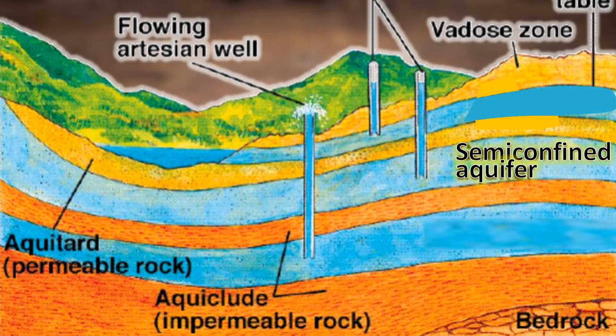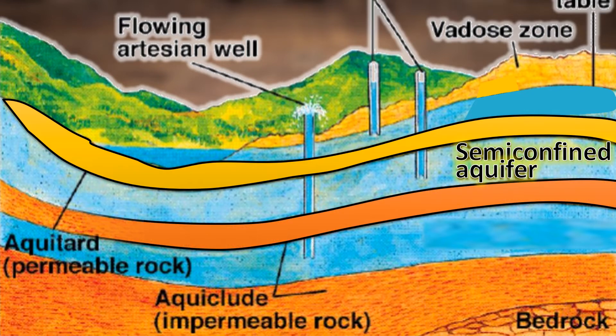A semi-confined aquifer is groundwater that is separated by a permeable layer, or aquitard, and an impermeable layer, or aquaclude, meaning it can move freely through one, but not the other.